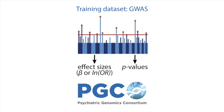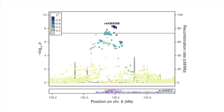For the calculation of PRS, this GWAS is considered the discovery or training dataset. The GWAS effect sizes are used as the weights when calculating a PRS. To get stable effect size estimates you need GWAS generated on large samples, as for example conducted by the PGC.